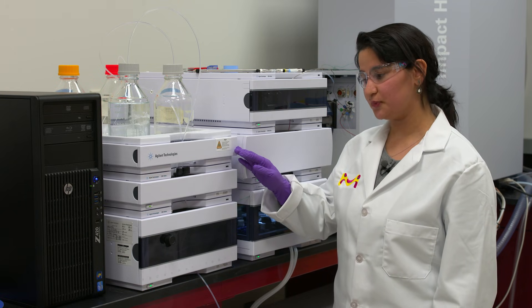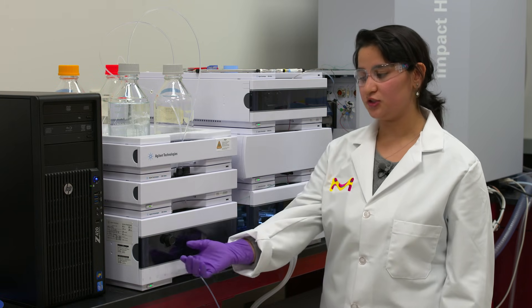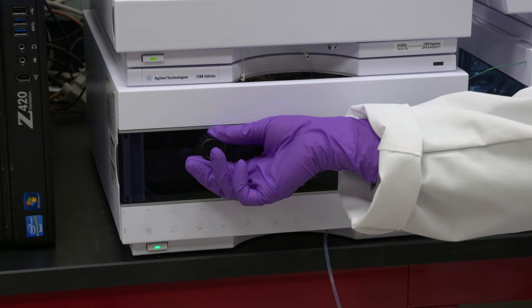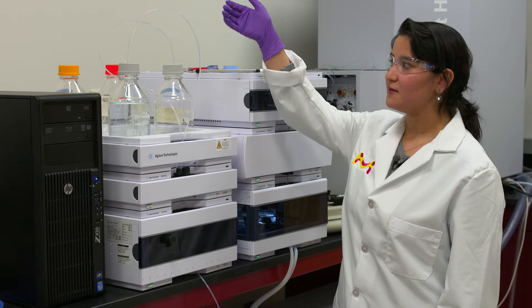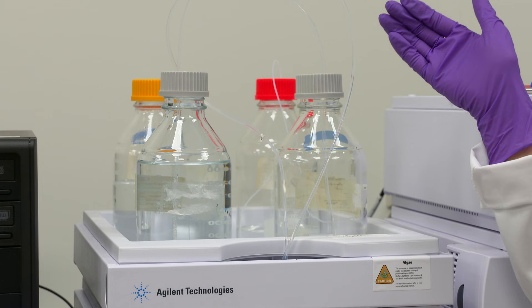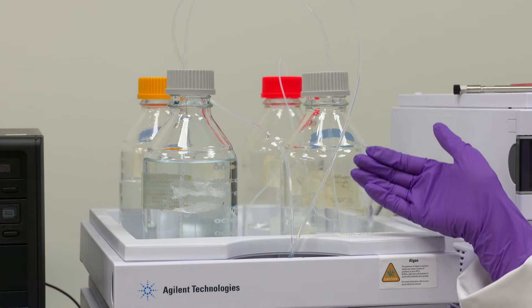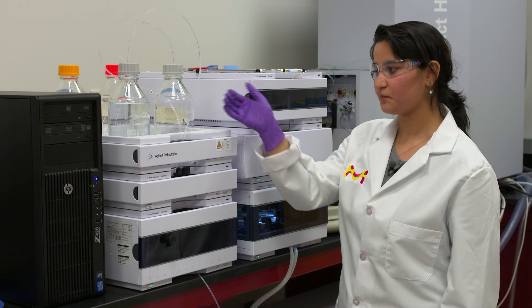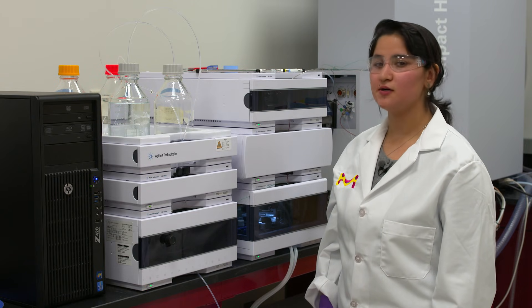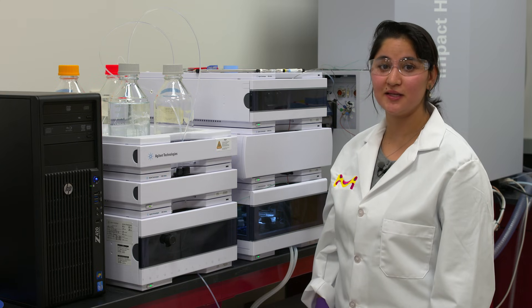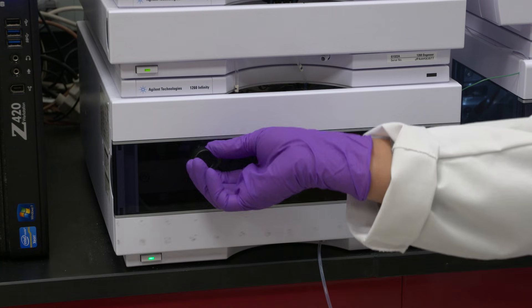To purge your HPLC, you will use the purge valve by opening it, which will be turning it to the left. Now you'll see that the tubing will eliminate any bubbles that could be in the mobile phase tubing. Once there are no bubbles flowing to the mobile phase tubing, your purge process has been completed and you can close your purge valve now.